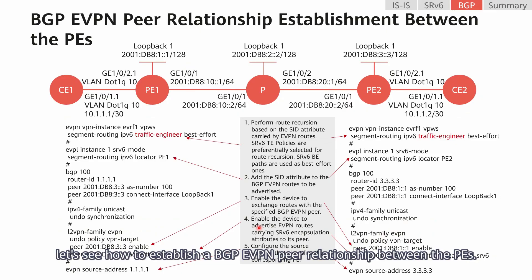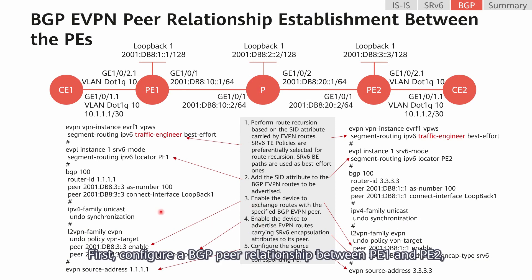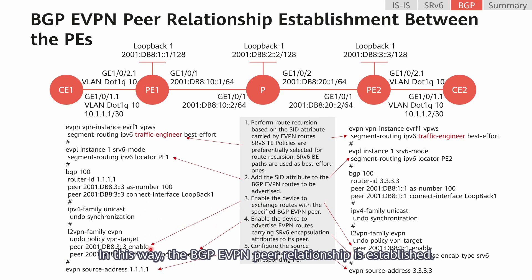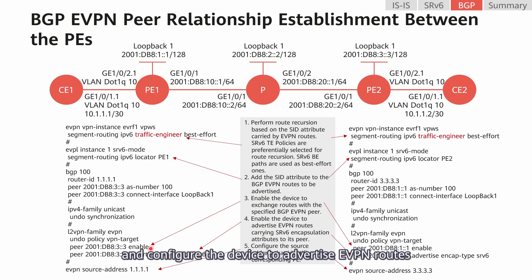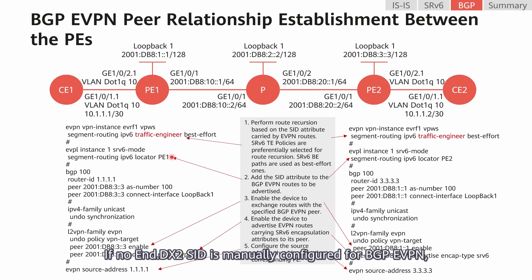Next, let's see how to establish a BGP-EVPN peer relationship between the PEs. First, configure a BGP peer relationship between P1 and P2, and enable the peer relationship in the BGP-EVPN address family. In this way, the BGP-EVPN peer relationship is established. Then enter the BGP-EVPN address family view and configure the device to advertise EVPN routes carrying SRV6 encapsulation attributes to its peer. Next, add the SID attribute to the BGP-EVPN routes to be advertised in the EVPL instance. If no End.DX2 SID is manually configured for BGP-EVPN, there will be a dynamically allocated one.